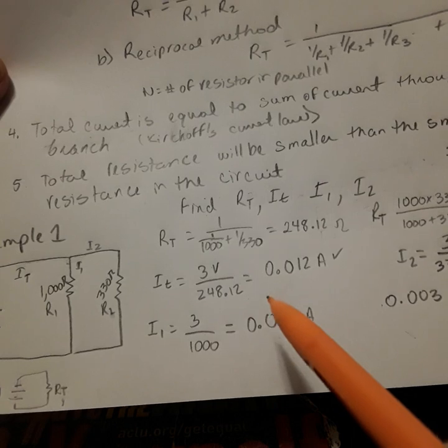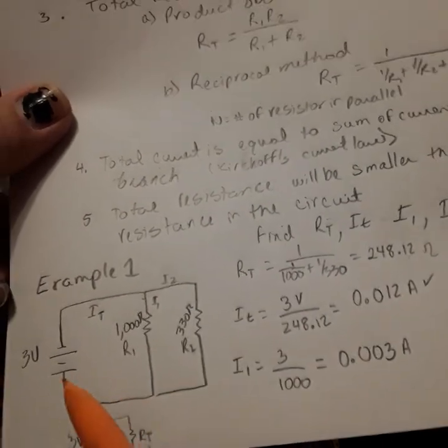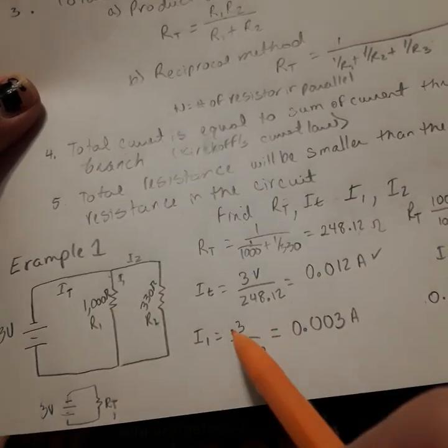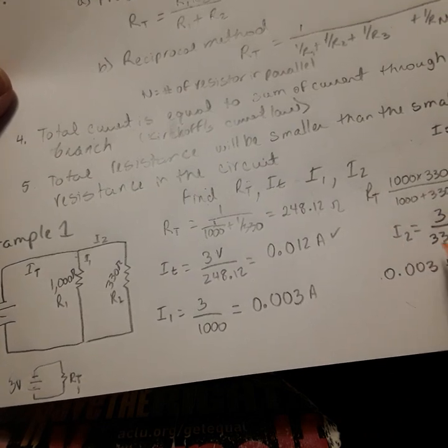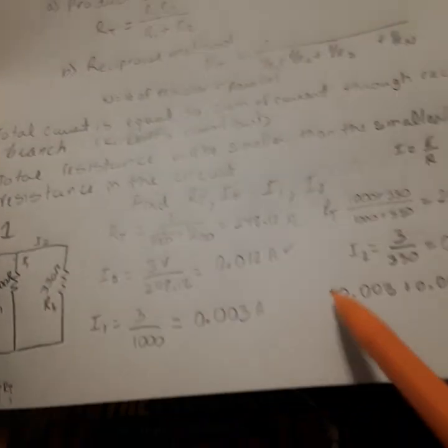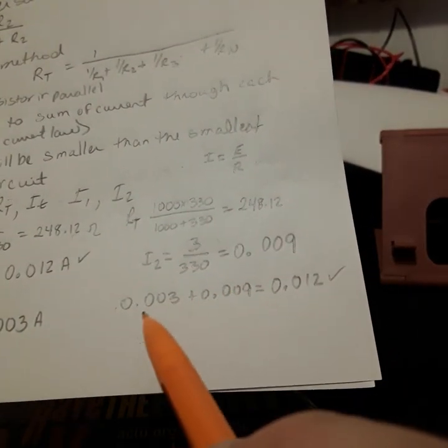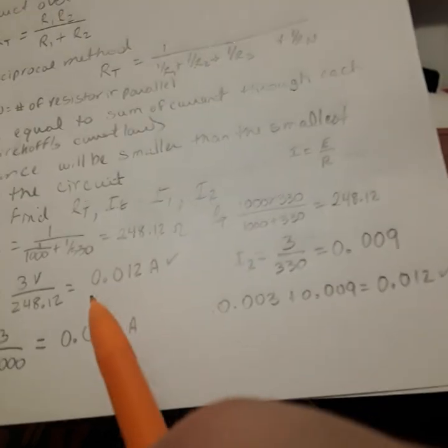We find IT equals 0.012 amps. To find I1, since the voltage is constant across this branch, we can take 3 volts divided by 1000 ohms, and 3 volts divided by 330 ohms to find the current through each branch. In the end, we can do a check to make sure we did it right - adding both currents equals the total current.